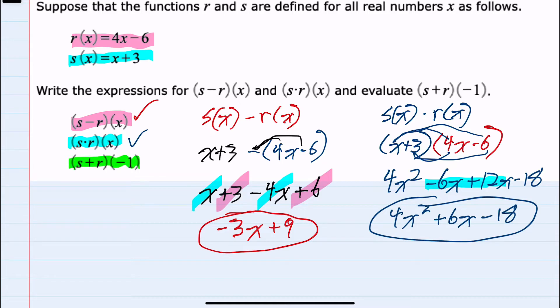And lastly, to find s plus r of negative 1, I can say that this is s of negative 1 plus r of negative 1.